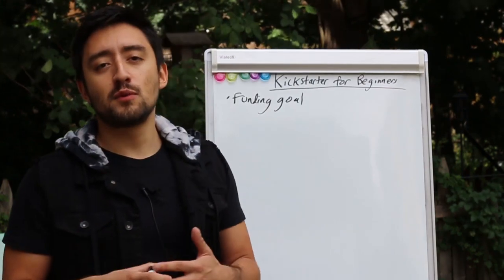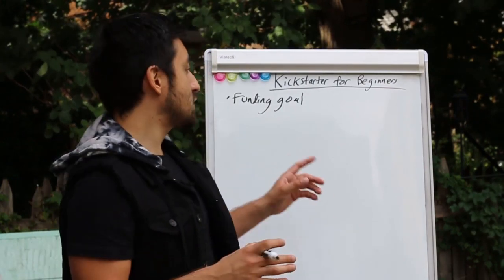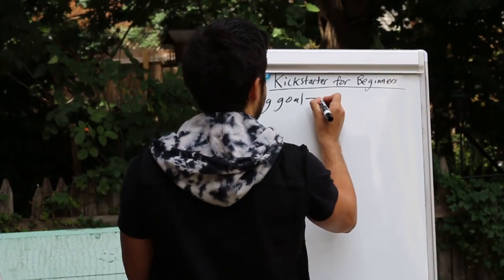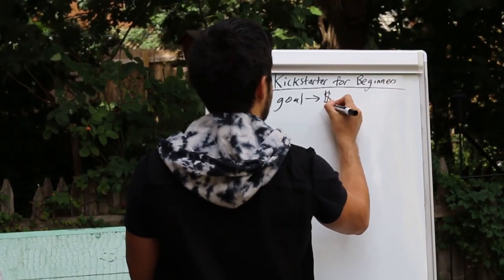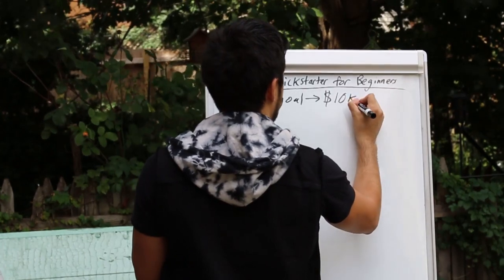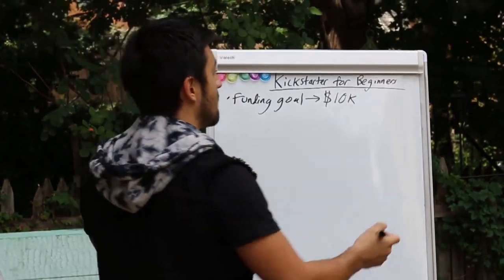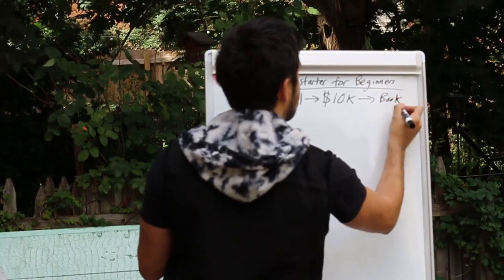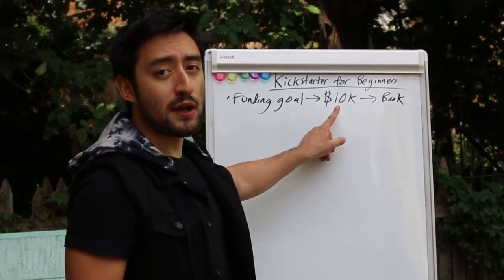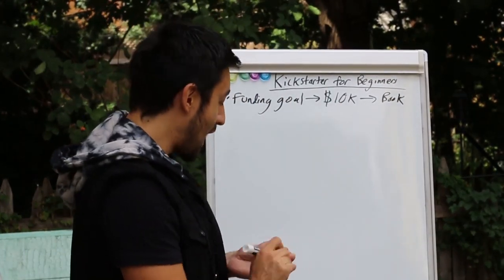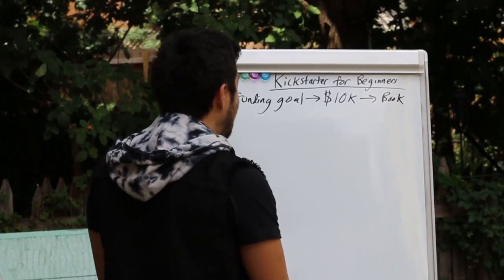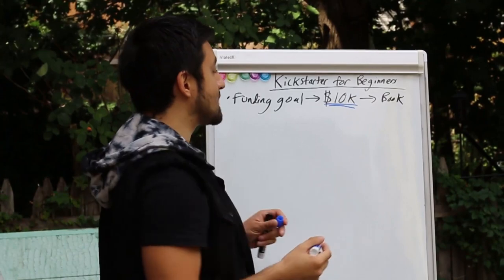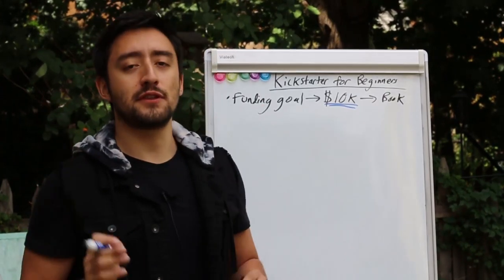Unlike other crowdfunding websites like Indiegogo, on Kickstarter you actually have to hit your fundraising goal. For example, say you have a $10,000 fundraising goal to publish a book. In order to keep the money you raise, you actually have to raise $10,000 or more. This is what we call all-or-nothing crowdfunding.